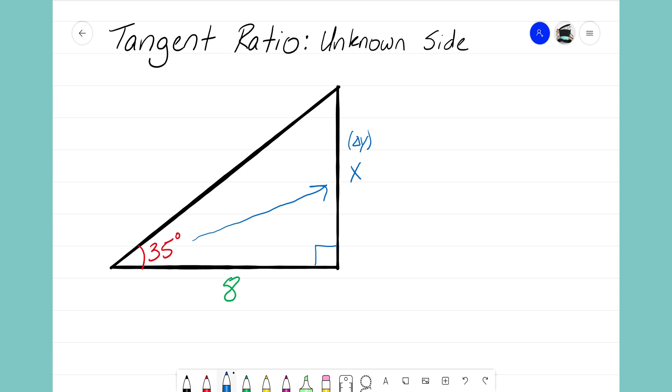My delta y here is x, it's an unknown side, and we don't know how long that side is. Down here on the bottom we see that the horizontal side here is our delta x, and delta x here has a value of 8.